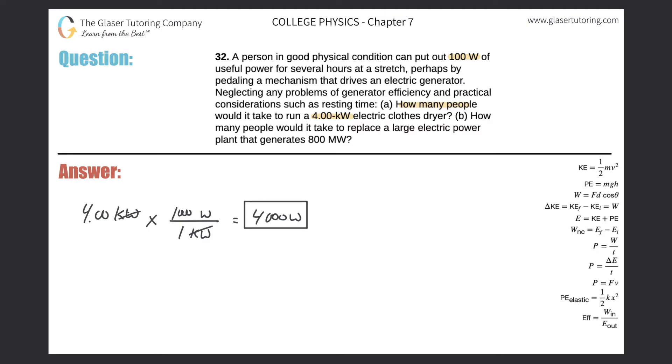So the clothes dryer requires 4,000 watts of power. And an average good physical conditioned human can produce about 100 watts of useful power. So how do we find then how many people it would take to power this 4,000 watt electric clothes dryer? It's a straightforward division. It would be 4,000 watts for the electric clothes dryer divided by then 100 watts per person.